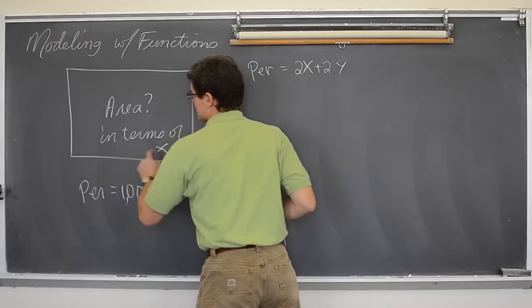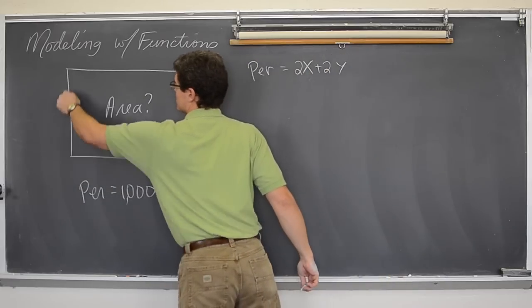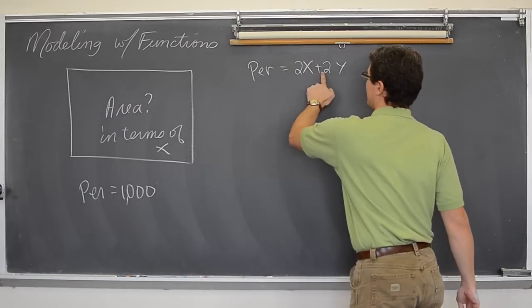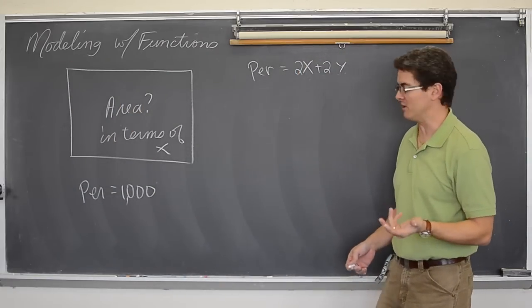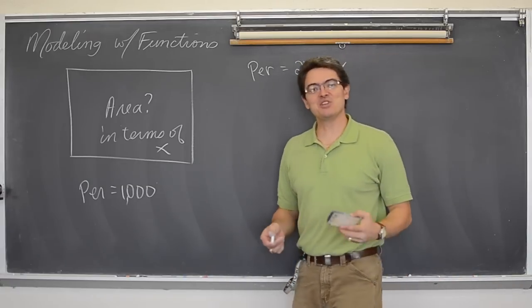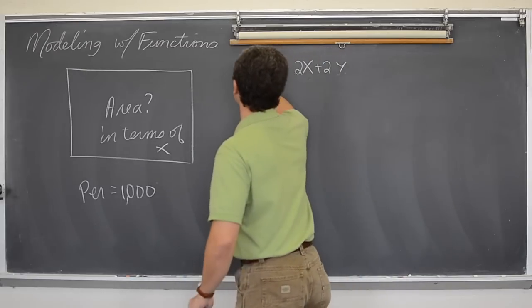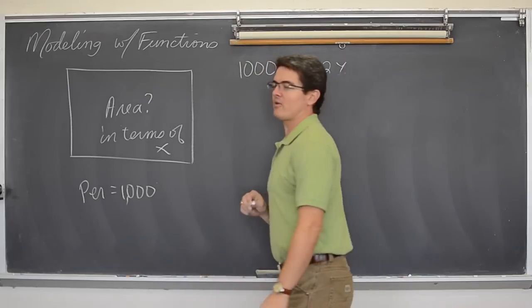So that is the perimeter. The two bottoms might be the two x's, and the two sides is y plus y. So if you add all four sides up, you have got this perimeter formula. Now the perimeter we are told is supposed to be 1000 units. 1000 feet, 1000 miles, 1000 inches, whatever you are doing. But the perimeter has to be 1000.